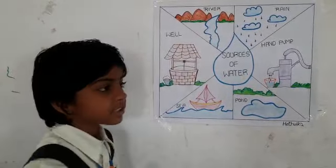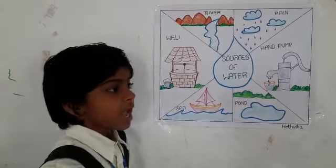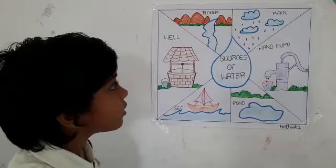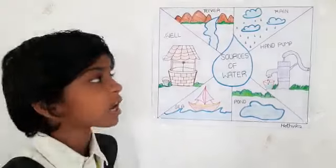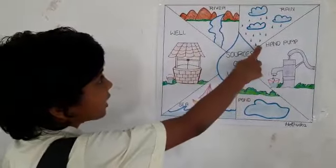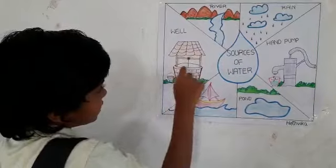Evaporation of water can make clouds, and clouds can make rain. Wells are another source of water.